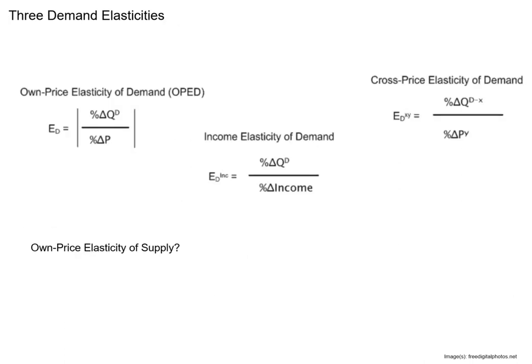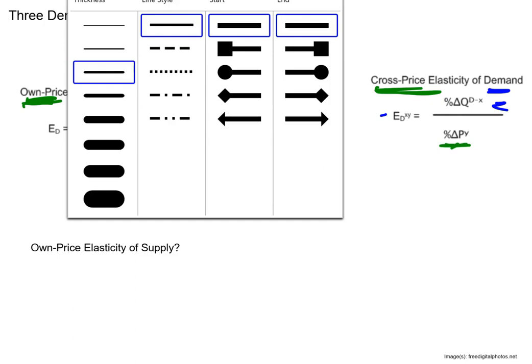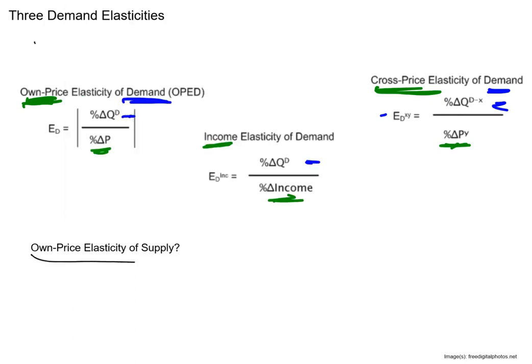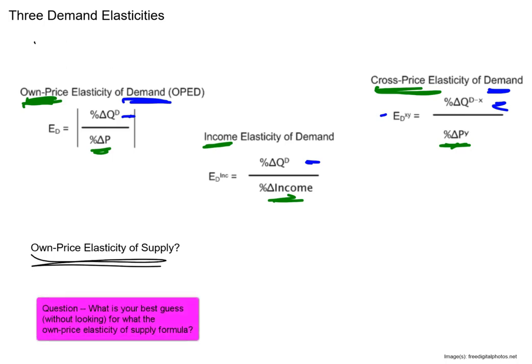Let me step back and give a big-picture comparison. In the own price elasticity of demand, the denominator is the good's own price. In the income elasticity of demand, income is in the denominator. In the cross-price elasticity, it's the price of the other good. And all three have quantity demanded in the numerator. Based on that pattern, could you come up with an equation for the own price elasticity of supply?